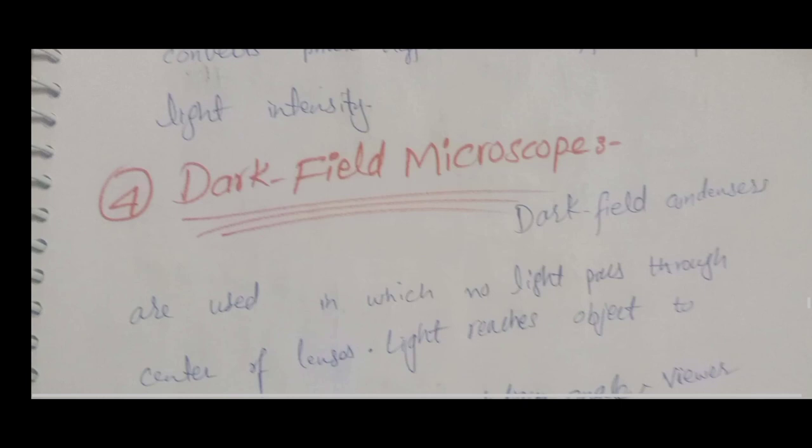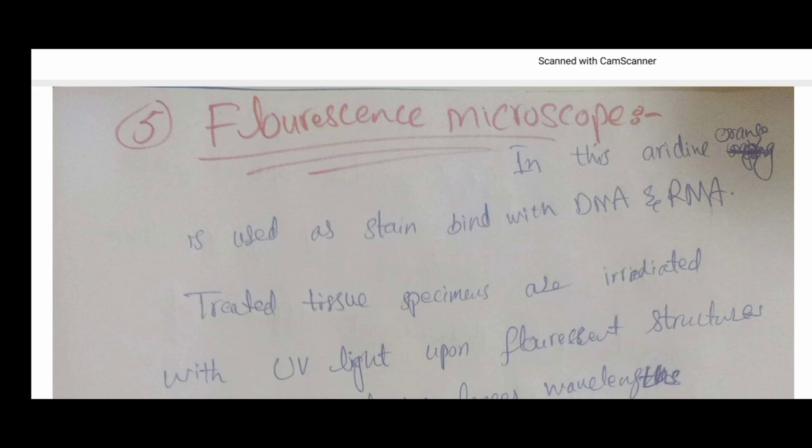The fifth type is the fluorescent microscope. In the fluorescent microscope, we use acridine orange for staining. This method is used to visualize DNA and RNA.